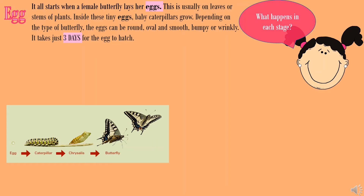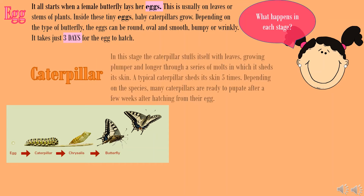The next stage is the caterpillar stage. In this stage, the caterpillar stuffs itself with leaves, growing plumper and longer through a series of molts in which it sheds its skin. A typical caterpillar sheds its skin five times depending on the species. Many caterpillars are ready to pupate after a few weeks of hatching from their egg.